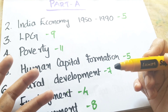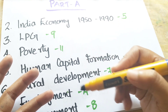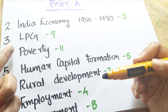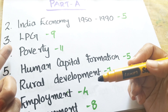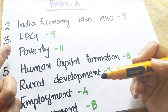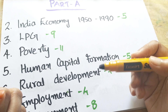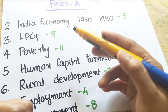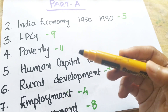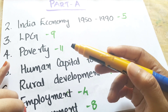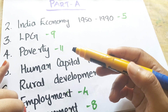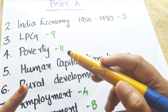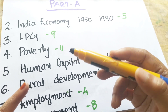The third chapter is LPG — LPG means Liberalization, Privatization, and Globalization. That chapter has a 9-question format with short answers. The fourth chapter is Poverty, again carrying 11 marks.